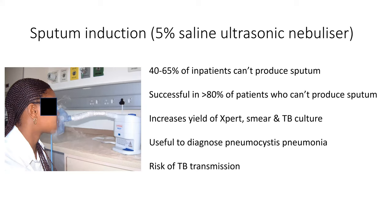Sputum induction can obtain sputum in about 80% or more of people who can't produce it spontaneously — in our study approaching 90%. The person who did our sputum inductions was a lay counsellor trained by a research medical officer, and he achieved induced sputum in 90% of people. It has been shown to increase the yield of Xpert, sputum smear, and TB culture. It is also useful for diagnosing pneumocystis. The downside is a risk of TB transmission, so we do this in a negative-pressure room, or outside, which works just as well.